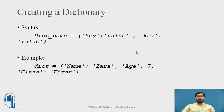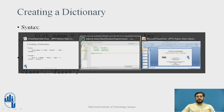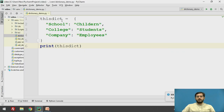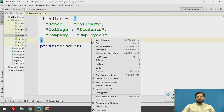Now, creating a dictionary. To create a dictionary, we can use the dictionary name equal to and assign the keys and values enclosed in curly braces. Keys and values are separated by a colon and the pairs are separated by a comma. We will see an example. This is a dictionary declared as this_dict which has assigned three key value pairs: school has children, college has students, and company has employees. We will run this code.